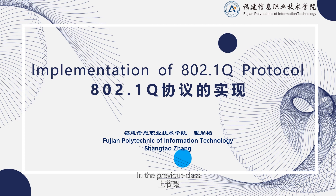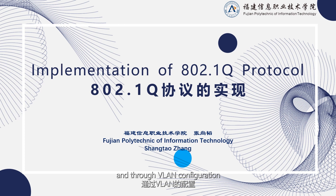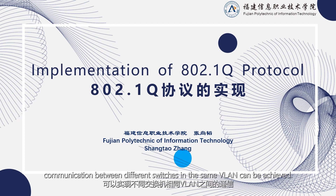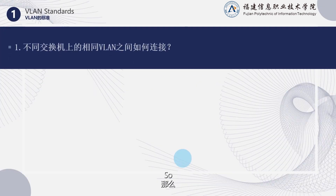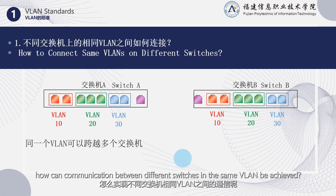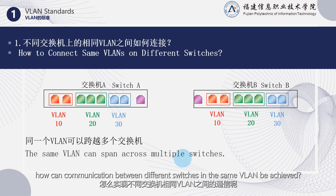In the previous class, we discussed the basic concept of VLAN. And through VLAN configuration, communication between different switches in the same VLAN can be achieved. So, how can communication between different switches in the same VLAN be achieved?